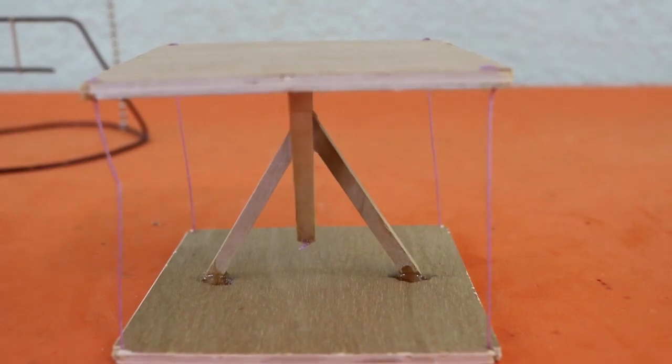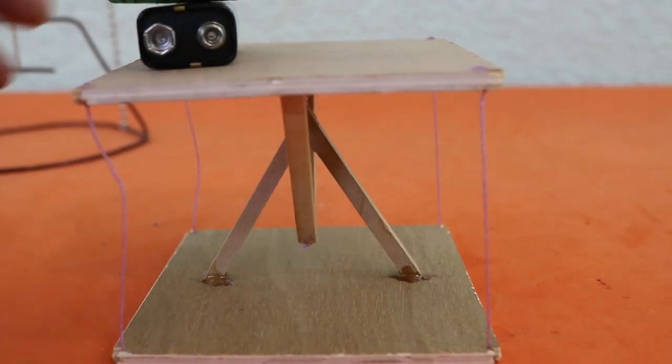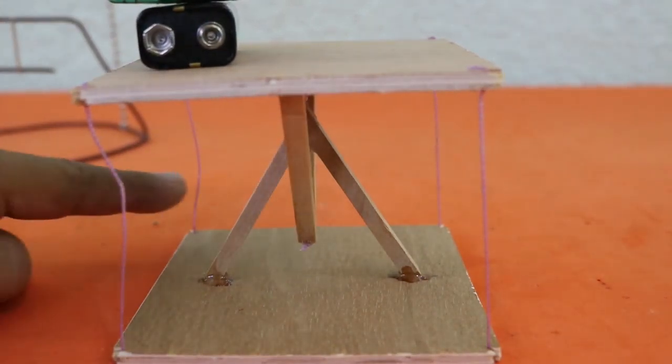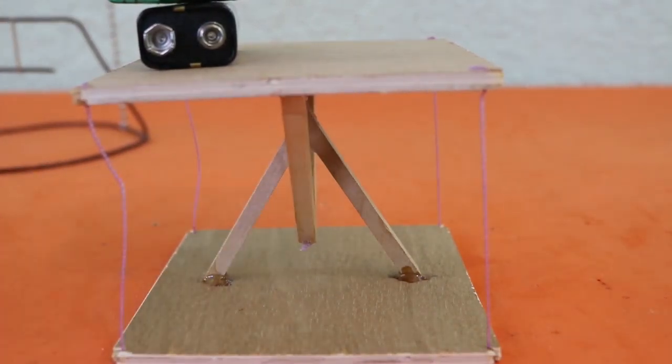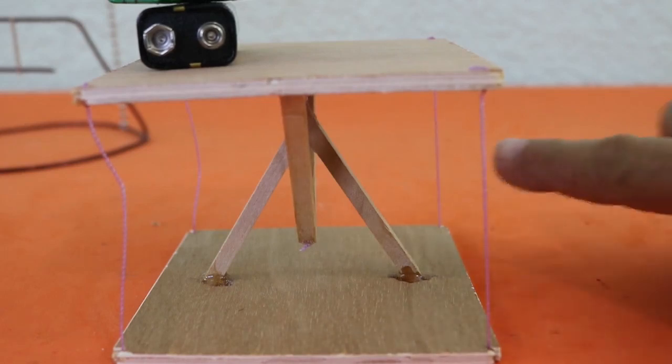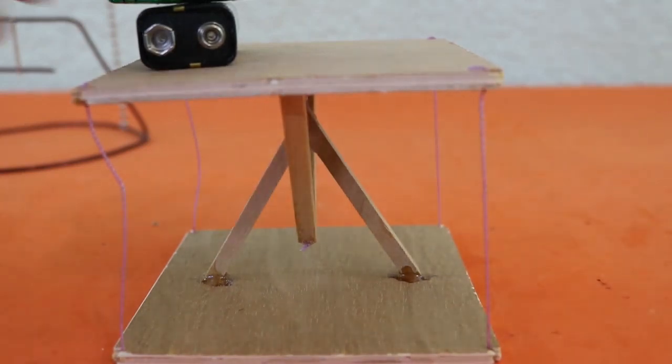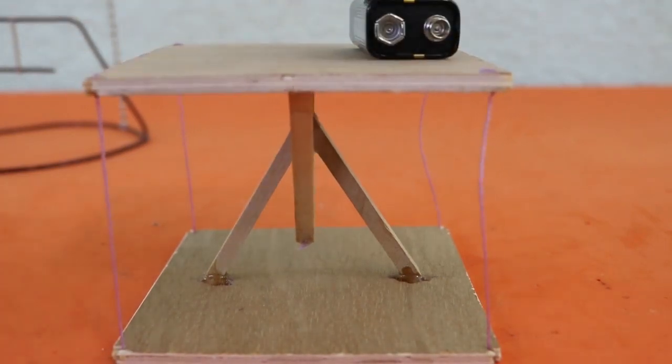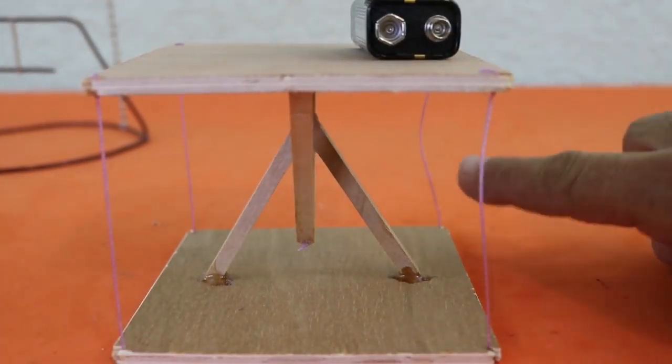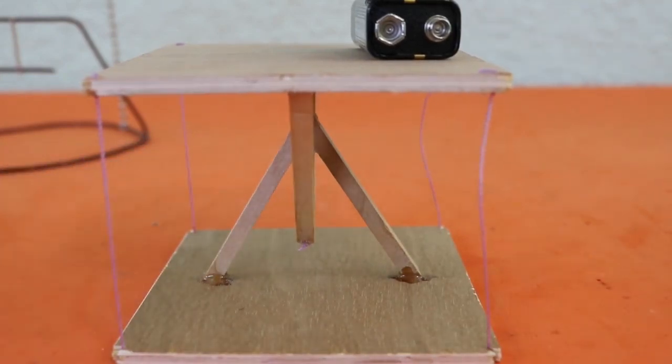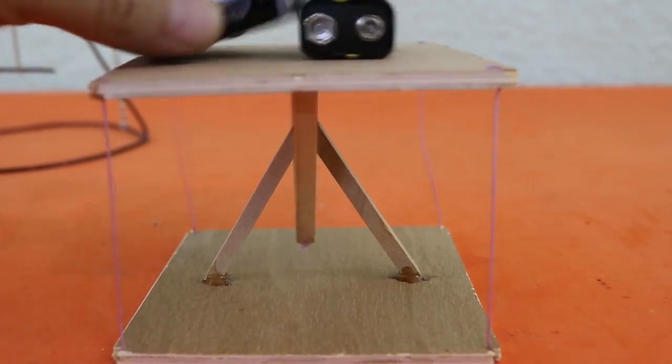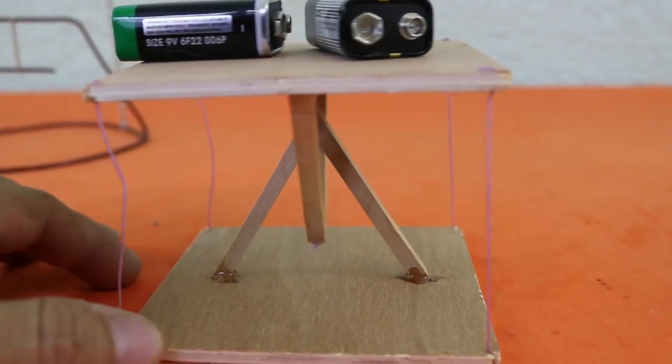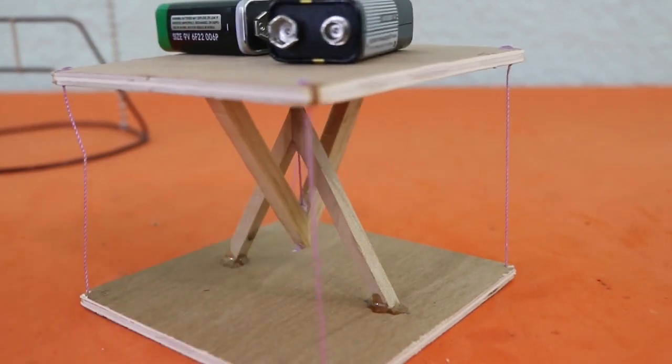We can see that if we put some weight at one of the sides, for example here, these two threads are loose and these other two are in tension. If we move the weight to the other side, the thread at the center is always in tension.